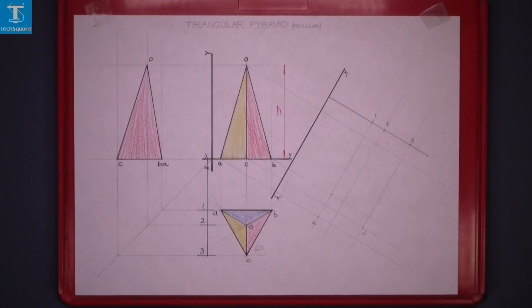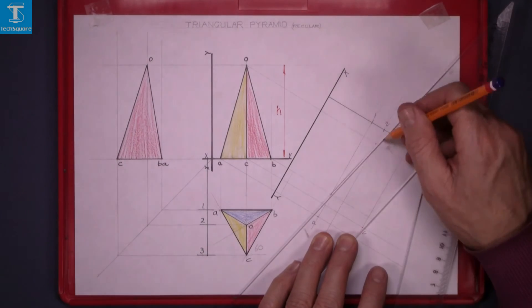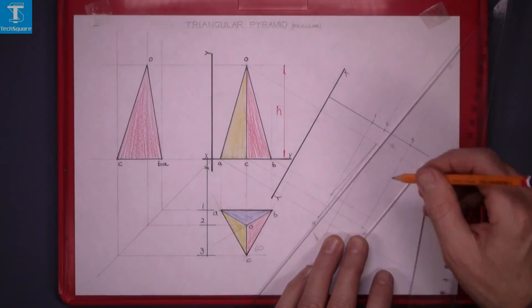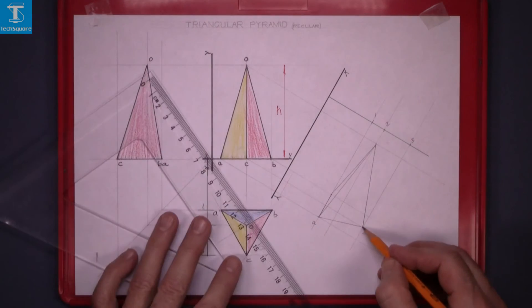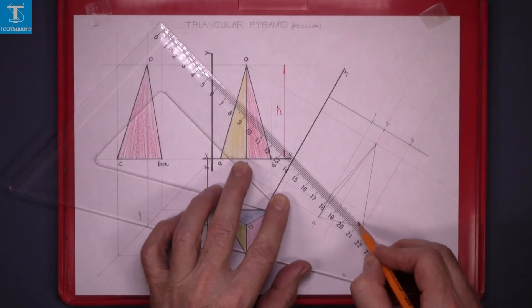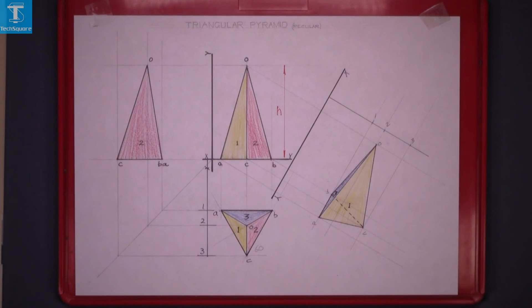And now join up those points to get the view that we're looking for. This point and this point, and then there's a dotted line across at the back here. This line is hidden. And that's the view completed there now.